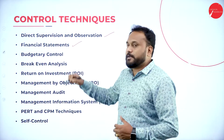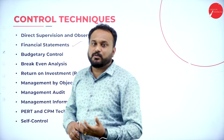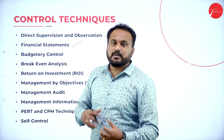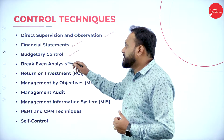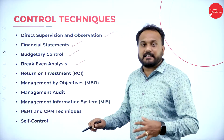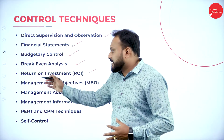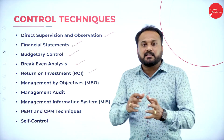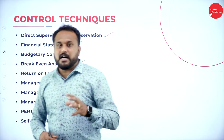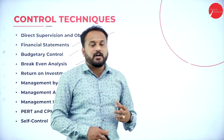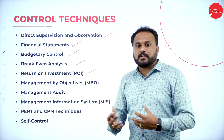The second technique is financial statements. You will understand whether the company is in control or not — when you look at profit or loss, you will understand where things are going wrong. Then we have budgetary control, break-even analysis, and return on investment. These are the things which you see in the books, and you'll know whether controlling techniques are being used properly or not, helping plan better for the next year.